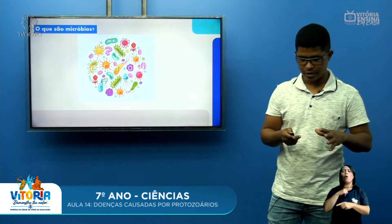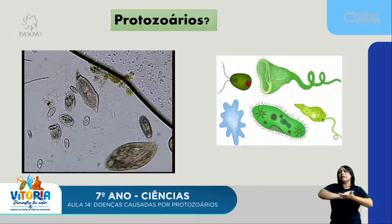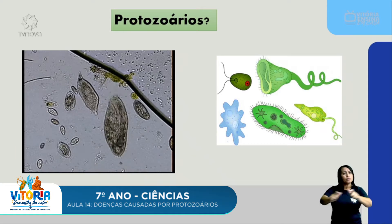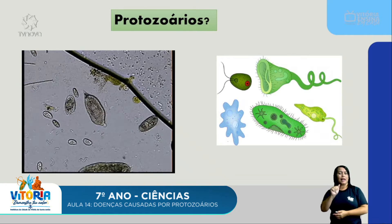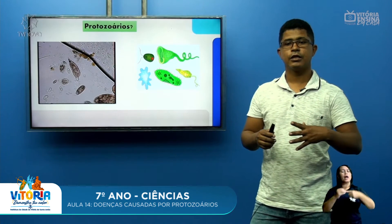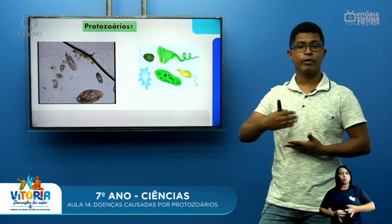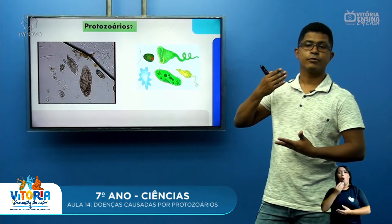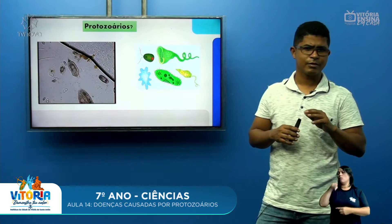Falaremos hoje, em especial, sobre os protozoários. Existem milhares de espécies diferentes de protozoários e eles vivem nos mais diversos ambientes. Tem protozoários chamados de saprófitas, porque vivem na terra, no meio ambiente e não causam mal algum aos seres humanos. Também existem protozoários que vivem dentro de animais ruminantes, que fazem ruminação, com estômago dividido em quatro compartimentos, onde o alimento vai a um pré-estômago, volta, é remastigado e continua a digestão — falaremos disso em outra aula.